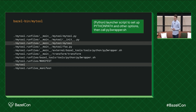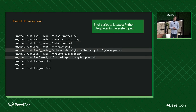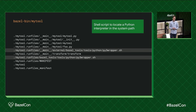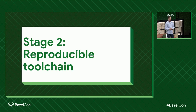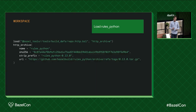Once that's done it calls something called py3wrapper.sh, which is a shell script that goes out into your system and tries to find a Python interpreter to run your Python binary with. This is the first problem you might run into — this is obviously not very reproducible. People have different Python versions on their system, or maybe no Python version at all. So the next step is you might want to set up a reproducible toolchain.